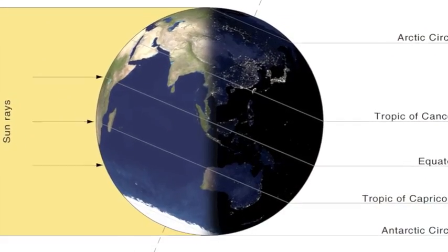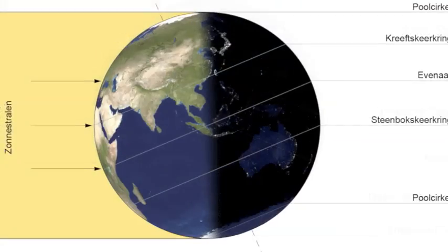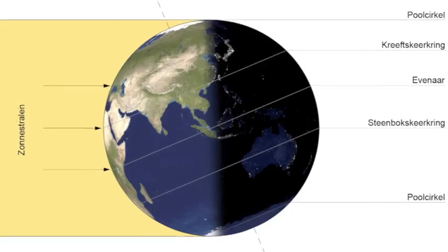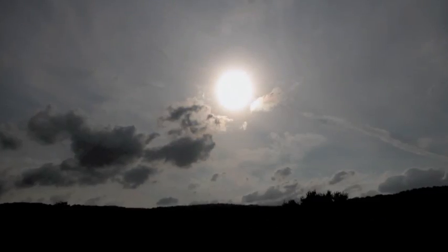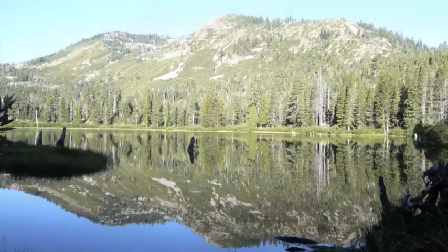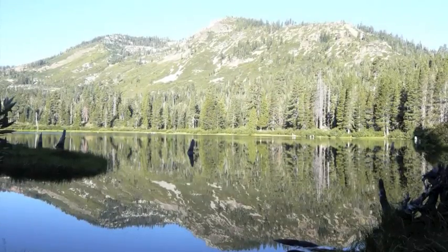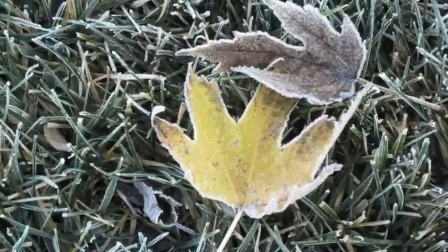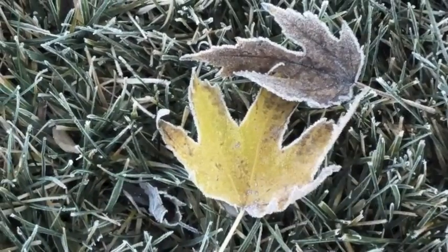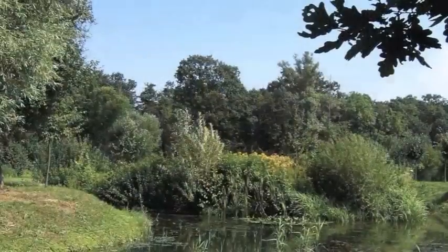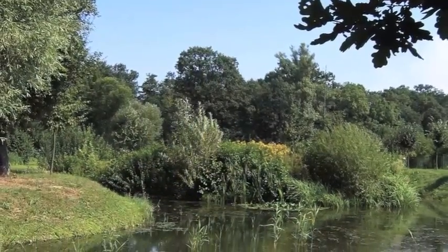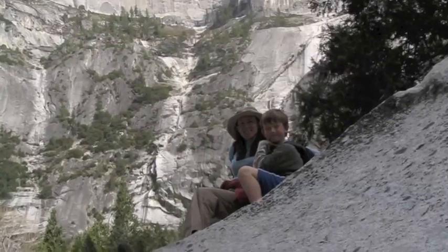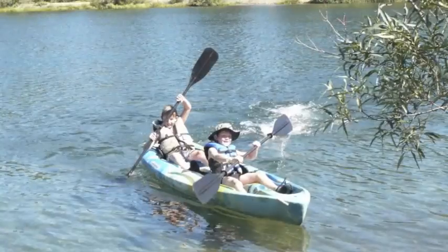The sun's energy hits the Earth at different angles, in different locations, at different times of the day and the year. The amount of heat energy given off is different in these different situations. This is one more piece of the puzzle to explain the real reasons for the seasons.